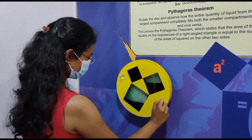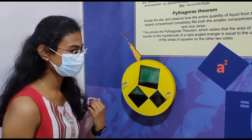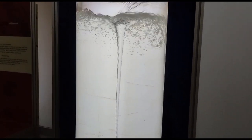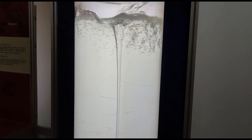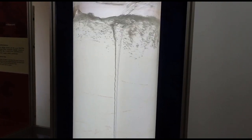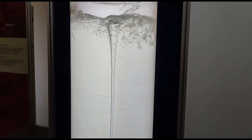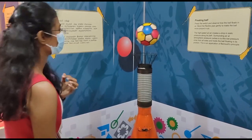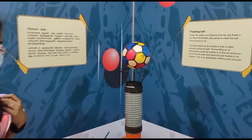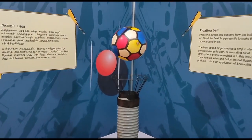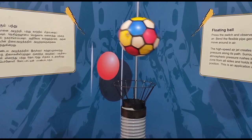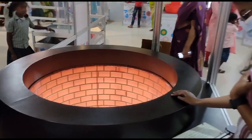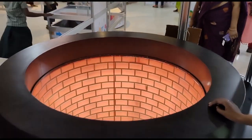If we go to the exhibition, we can explain how it is. This is a button. This is a floating ball. If we turn it, we can show how it is.